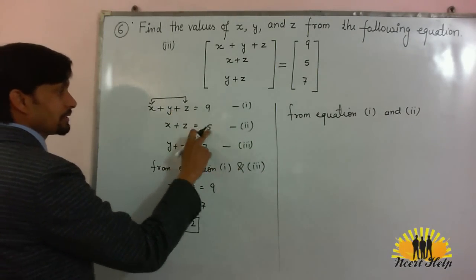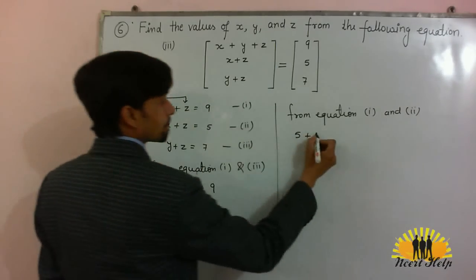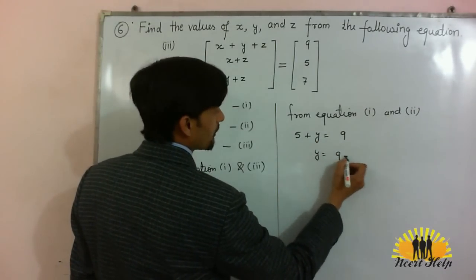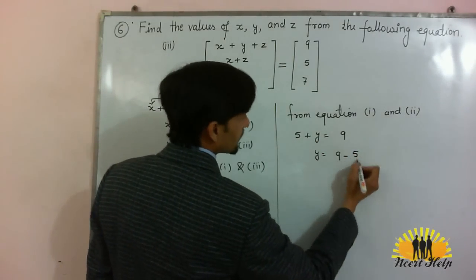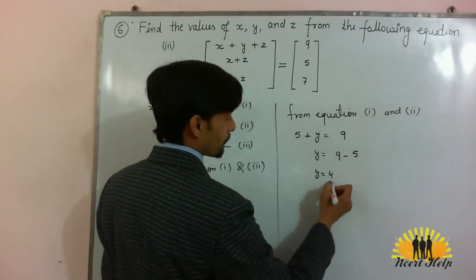So x plus z will be 5 plus y is equal to 9. y will be 9. Take 5 to that side, it will become negative and the value of y will come as 4.